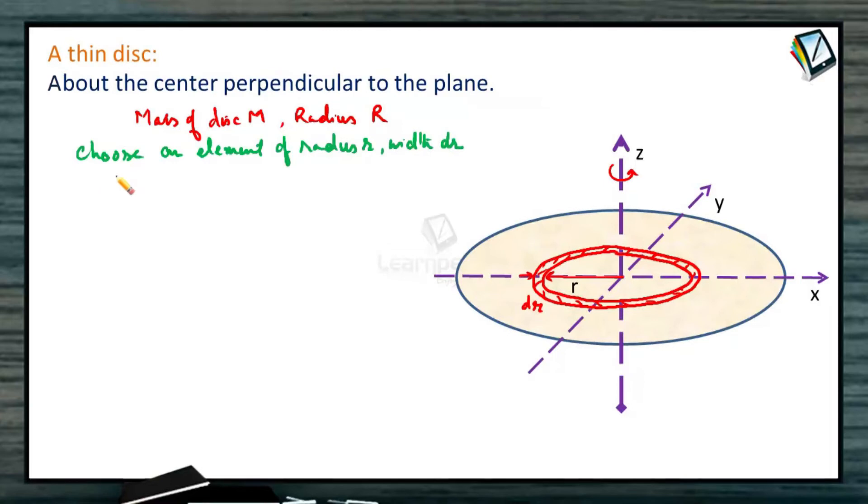So what is the mass of this element? dm will be total mass of the disk by its area pi R square into area of this element 2 pi r dr. 2 pi r is the circumference into thickness dr that will give you dm.